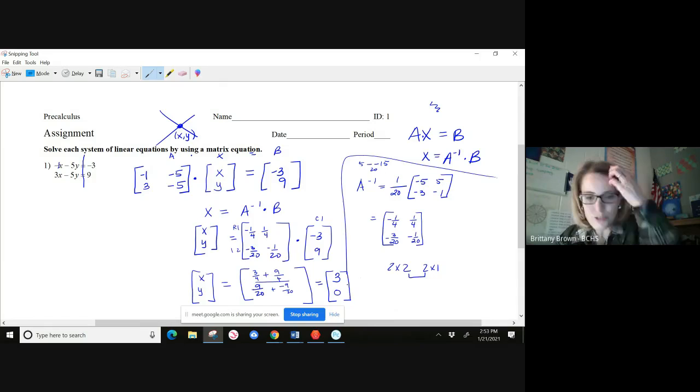So your answer would be the matrix 3, 0. Now if we correspond that with the way we wrote it over here, that means x is 3 and y is 0. What that means is that if we graph these, that's where those points would intersect.